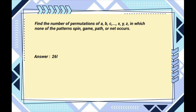To count the number of permutations that contain spin, we treat spin as a single letter, which can be permuted with the other 25 letters. This gives us 25 factorial permutations that contain spin. Similarly, treating gain, path, or net each as a single letter gives us 23 factorial permutations containing gain, 23 factorial containing path, and 22 factorial containing net.